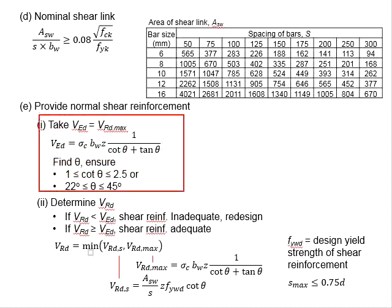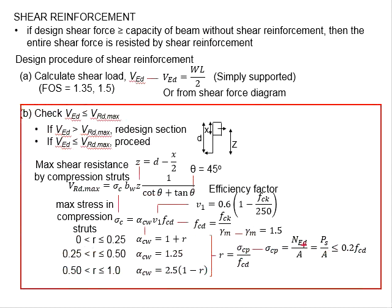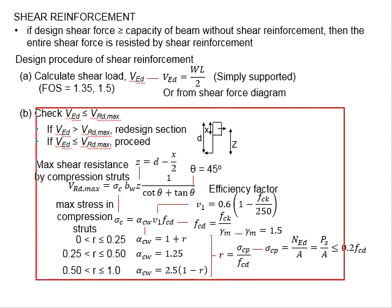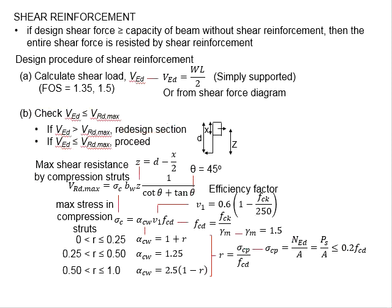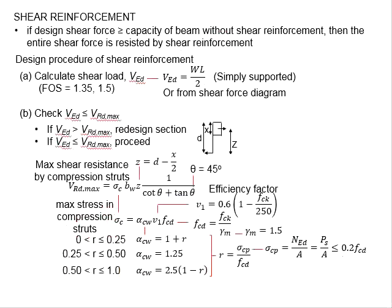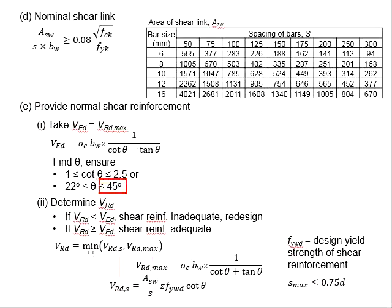What you see in the calculation step here, it is actually a repetition of this process. This process is meant to check whether the section needs to be redesigned. In fact, if you skip this step, you can still determine whether the section needs to be redesigned. It is when you found the theta is more than 45 degrees. Now, it is up to you whether you want to check this first or to check this later.